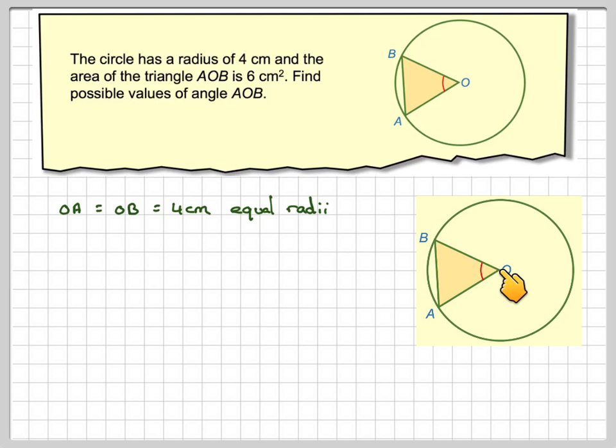Because this is a circle, this length here has to be equal to this length here, because what we have is what's known as equal radii. Radii is plural for radius.